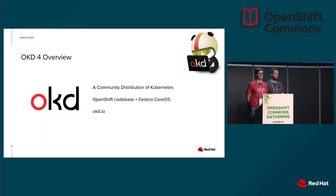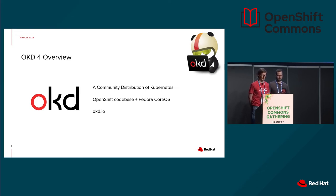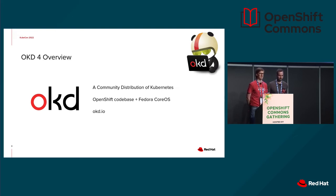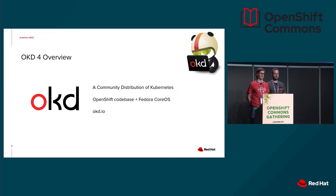OKD is our community distribution of Kubernetes. It's composed from volunteers, mostly from Red Hat, but other companies are also involved as they get to use most of the OpenShift codebase. But instead of RHEL CoreOS, we use Fedora CoreOS as the basis. This decision was made so that we could streamline contributions sooner into the final product, instead of passing it through Fedora, then into RHEL, and then into the final product for customers.